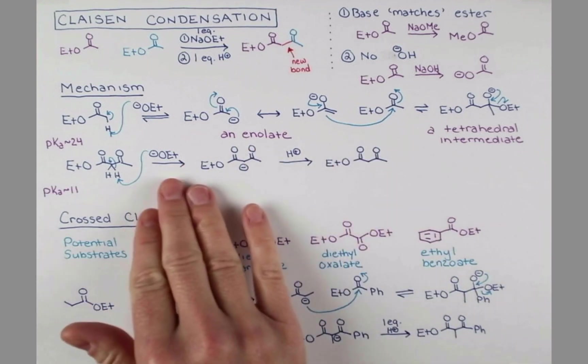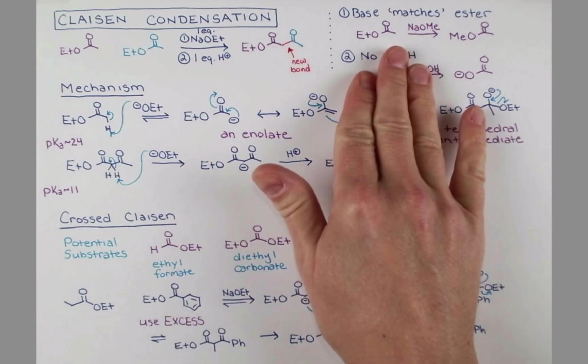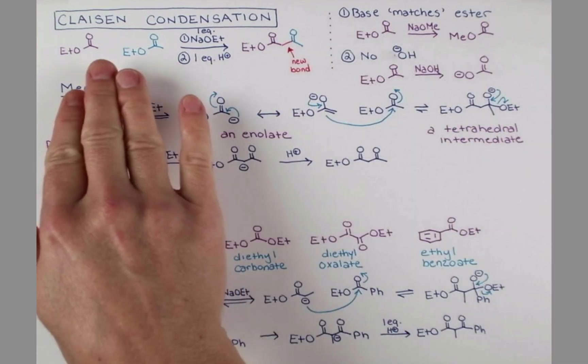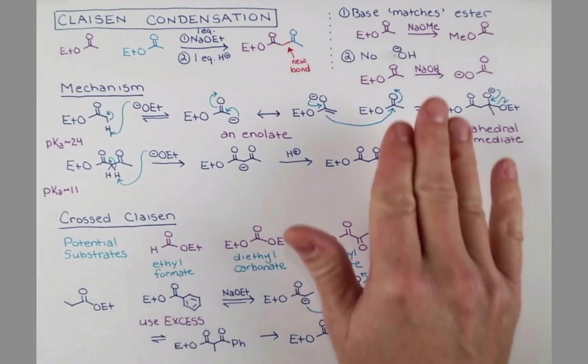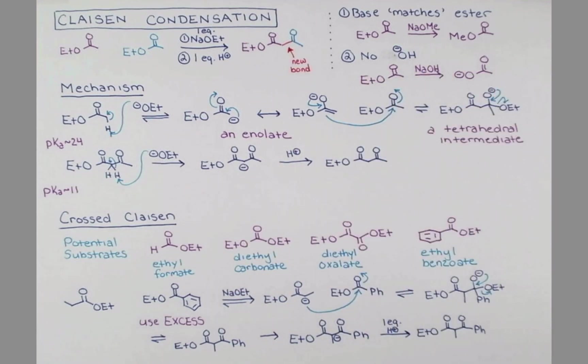In this lesson, we looked at the mechanism of the Claisen condensation. We learned that base choice is important. The base should match the ester on the molecule. And we shouldn't use hydroxide because that can cleave esters. We also learned that the crossed Claisen isn't the best synthetic reaction. However, it can be done with substrates that don't contain any enolizable protons if they're used in excess.